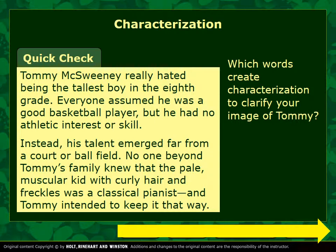Let's try it out. Which words create characterization to clarify your image of Tommy? Tommy McSweeney really hated being the tallest boy in the eighth grade. Everyone assumed he was a good basketball player, but he had no athletic interest or skill. Instead, his talent emerged far from a court or ball field. No one beyond Tommy's family knew that the pale, muscular kid with curly hair and freckles was a classical pianist, and Tommy intended to keep it that way. Take a second to look at the screen and think about which words help create Tommy for you.